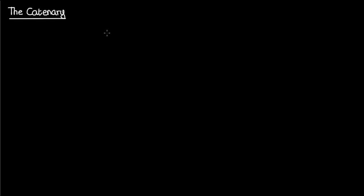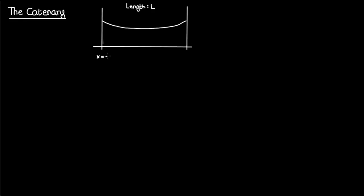Some of you may not know what a catenary is, so let me describe the problem we're going to solve first. Suppose I had a string of length L, and I hung the ends of that string from x equals negative A to x equals A in the presence of gravity. Suppose also that L is greater than 2A, which means that instead of being flat and horizontal, the string will actually sag downwards when gravity is present. The shape of this hanging string can be described using a function y of x, and this shape that the string takes on when hanging under gravity is called a catenary.